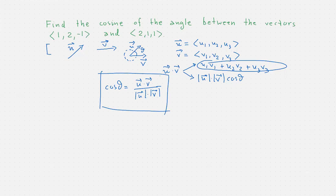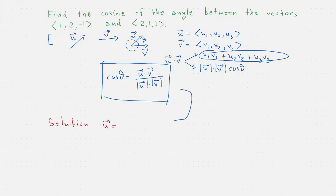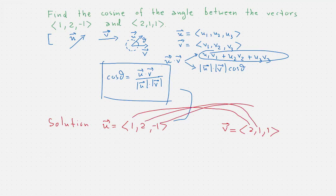This is precisely the formula we would like to use. For two vectors whose coordinates are given, using this formula is quite straightforward. Here's the solution. The vectors are (1, 2, -1) and (2, 1, 1). Schematically, we take the product of corresponding components and add them up. So u·v = 1×2 + 2×1 + (-1)×1, which equals 3.